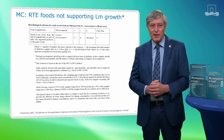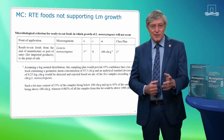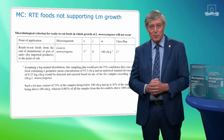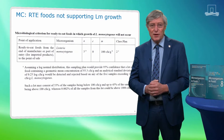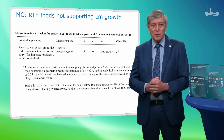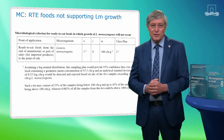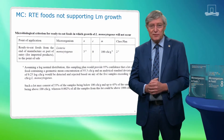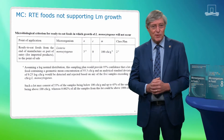Here you see an overview of the MC proposed by Codex in Codex document CAC-GL61 of 2007. Let's zoom in on the proposed sampling plan and the assumptions that Codex based the sampling plan performance on. For RTE foods not supporting LM growth, Codex advises a two-class sampling plan with a microbiological limit, small m, of 100 CFU per gram. A food lot is considered to meet this sampling plan when five sample units (N = 5) are tested for LM and none of the five samples has an LM level over 100 CFU per gram.